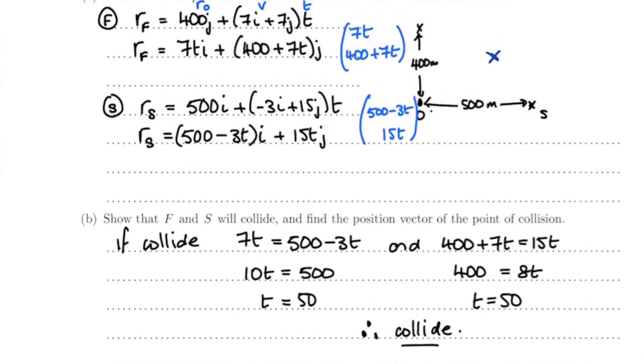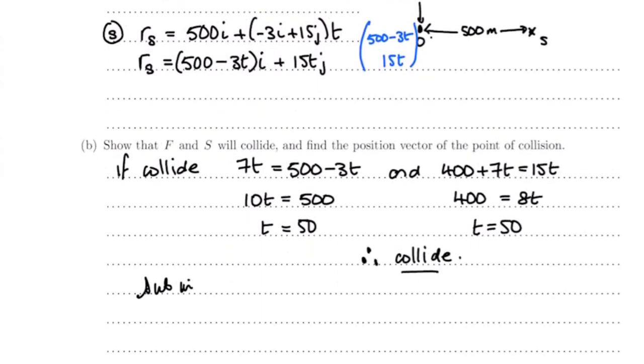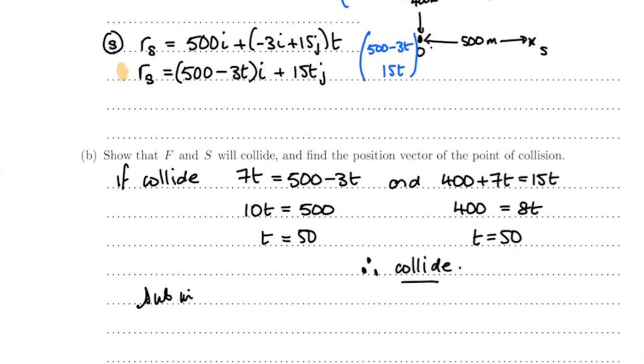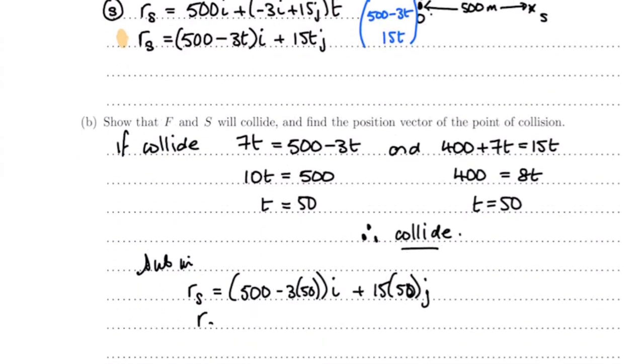Now we substitute that into one of the two equations because it says find the position vector of the point of collision. I'm going to substitute into rS. So rS equals, t is 50, so it's 500 minus 3 times 50 in the i direction, the x direction, plus 15 times 50j. And if you sort that out, rS therefore equals 350i plus 750j meters, and that's the point at which they collide.